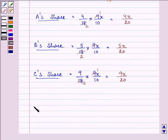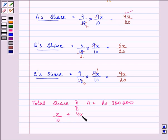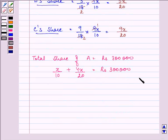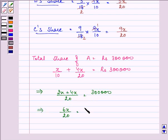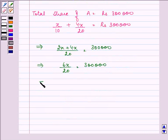Further, total share of A is given to us in rupees as 3 lakh. That means his salary that was X by 10 plus his share in the remaining profit in total gives him rupees 3 lakh. So, with the help of this equation, we can easily find out the value of X. That is equal to 2X plus 4X upon 20 equal to 3 lakh. That further implies 6X upon 20 is equal to 3 lakh. That further implies X is equal to 3 lakh into 20 upon 6.